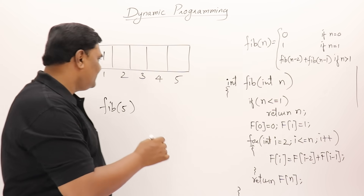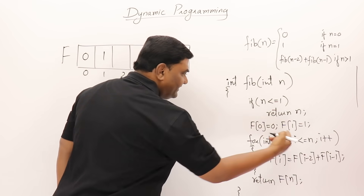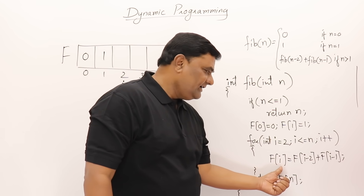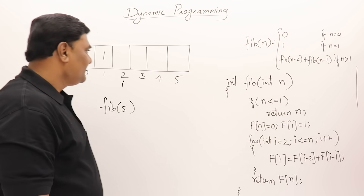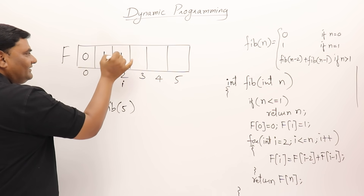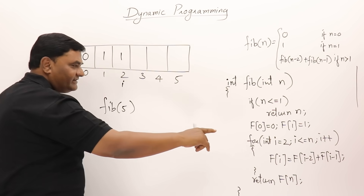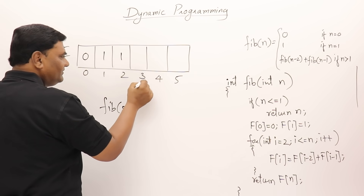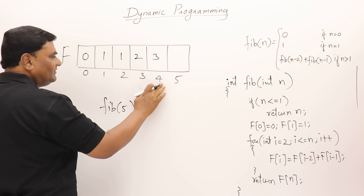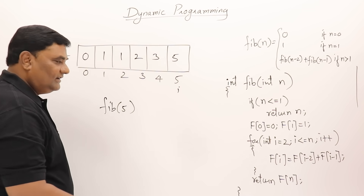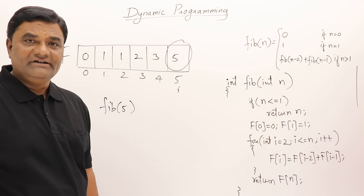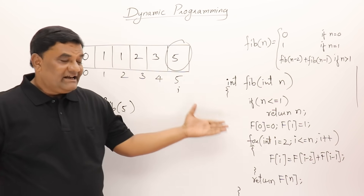The loop starts from i=2 up to n=5. Every iteration computes f[i] = f[i-2] + f[i-1], adding the previous two terms. So it fills f[2]=1, f[3]=2, f[4]=3, f[5]=5. It returns f[n], which is f[5] = 5. The fifth Fibonacci term is 5. This is how a table is filled by this function.